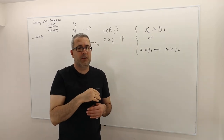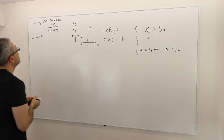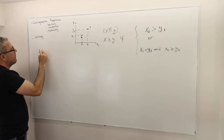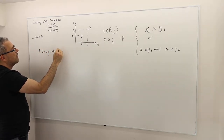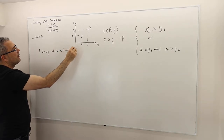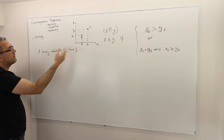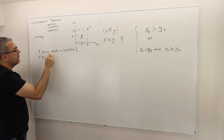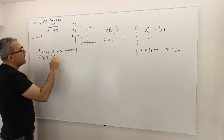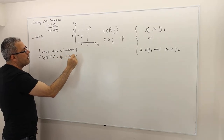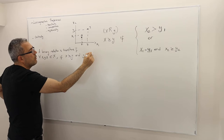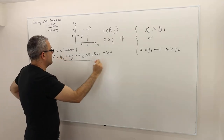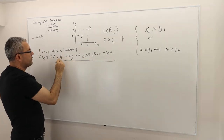Now let's prove that lexicographic preferences are transitive. A binary relation is transitive by definition: for any x, y, z, if x is at least as good as y, and y is at least as good as z, then x must be at least as good as z. This is a conditional sentence — if the first part is true, then the conclusion should be true.